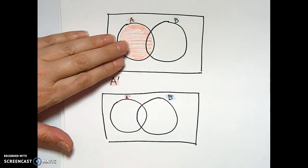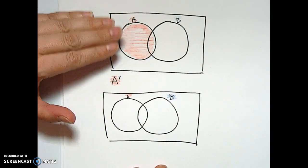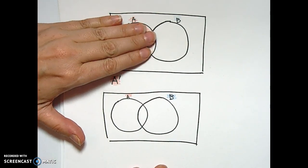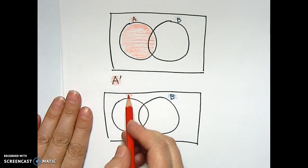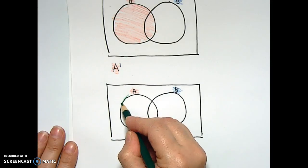Alright, so for A not or A complement, we want anything that's not red. So everything that's not A is what we're going to shade in. And it's really helpful for a lot of people to make a dark, dark line around.